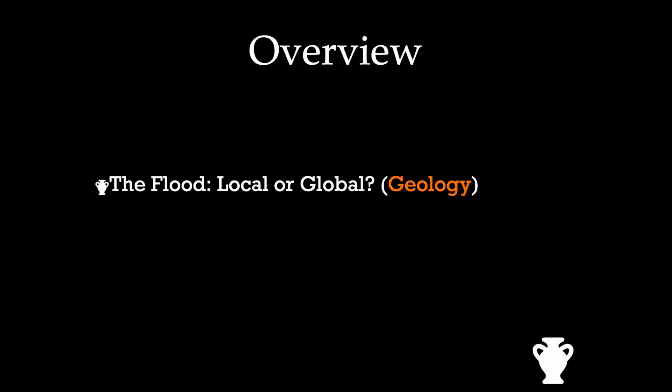Depending on how you answer this question will determine where you see the archaeological record begin. If the flood was local — a localized flood in Mesopotamia — then the archaeological record is going to be a result of slow, gradualistic human evolutionary changes, from simple-celled creatures through the higher primates, eventually developing into advanced civilizations through Homo sapiens sapiens. But if there was a global flood that destroyed everything on the face of the earth, then where the archaeological record begins takes on a different color.